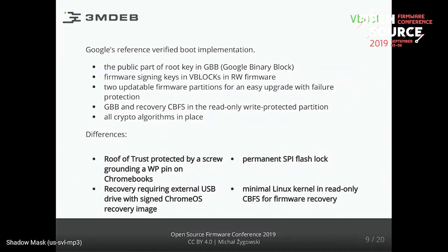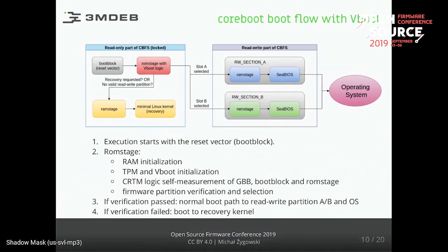What's different in my implementation versus Google's Chromebook implementation? In Chromebooks, the root of trust in the SPI flash — the self-measurement — was protected by block protection bits along with hardware protected mode: locking the status register and additionally protecting it with a write protect pin, screw, or jumper. In my implementation, the lock is permanent, independent of the write protect pin state. Also, Chromebooks use external USB to recover the operating system, not the firmware. In my implementation I have put a minimal Linux kernel in read-only storage to provide a friendly shell environment.